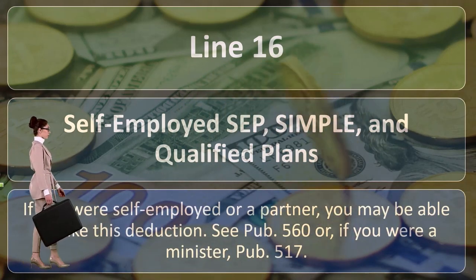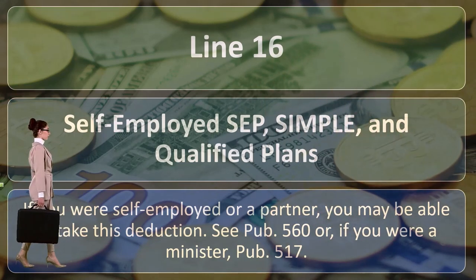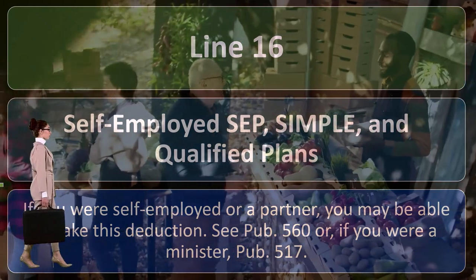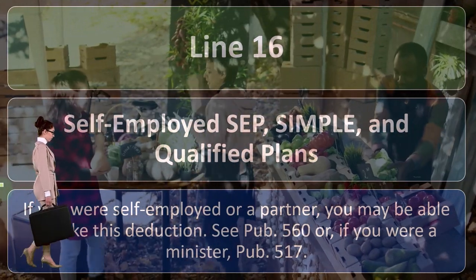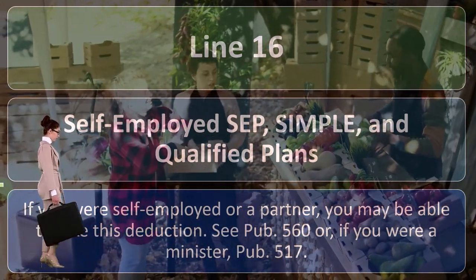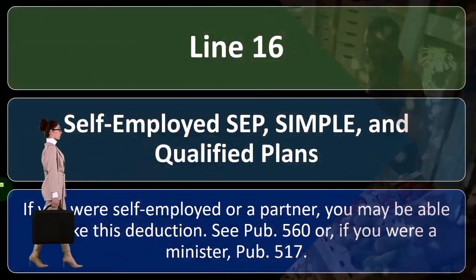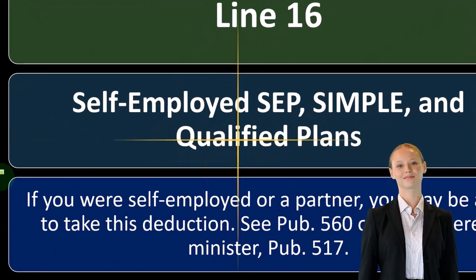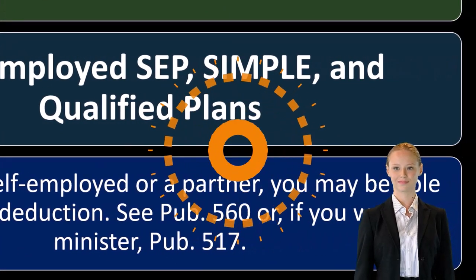If you were self-employed or a partner, you may be able to take this deduction — see Publication 560, or if you were a minister, Publication 517. If you're self-employed as a sole proprietorship and start generating money with cashflow, you might ask: how can I put money away for retirement and get more of a tax benefit than simply putting money into an IRA, since that has a fairly low limit? 401k plans are more complex, so you might compare plans like a SEP and a SIMPLE to see what best fits you and your business.